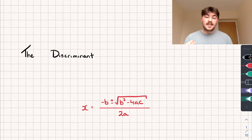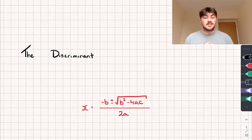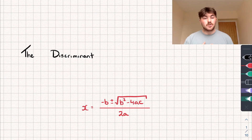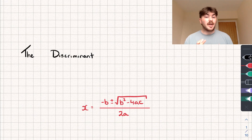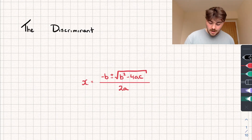Hello, in this video we're going to be taking a look at something called the discriminant. This is something you wouldn't have seen before in GCSE maths, but it follows on quite nicely from the quadratic formula, so I thought we'd take a little look at it, and we can also get ahead for A-level at the same time.